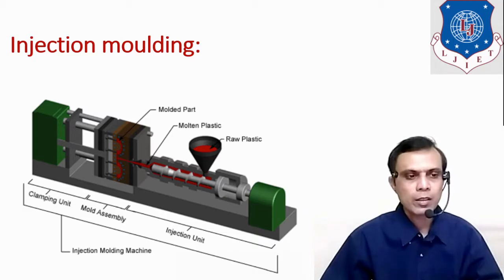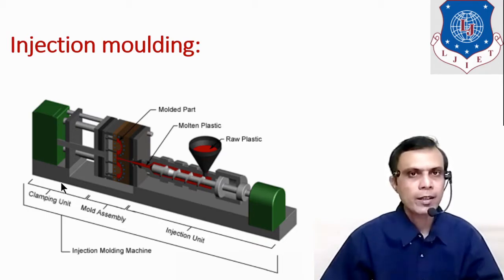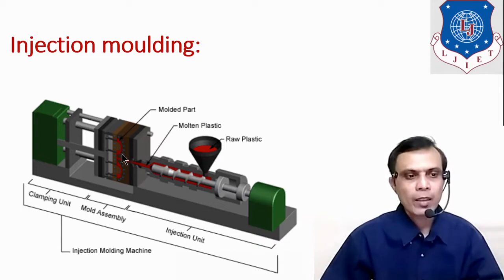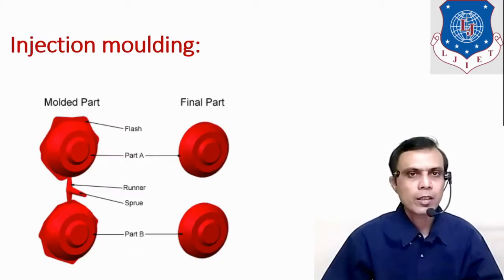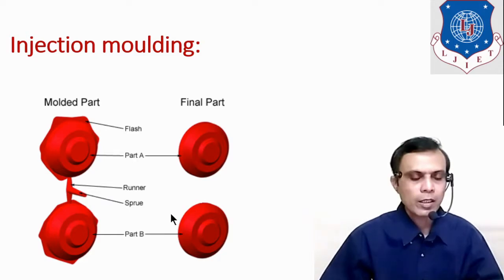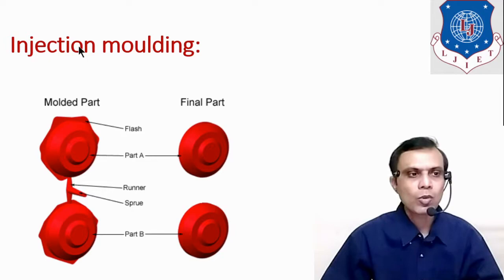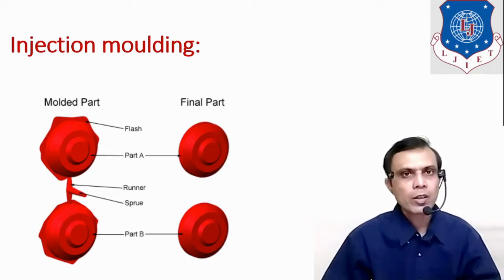The overview of the machine setup is shown here. It consists of three units: Injection Unit, Mould Assembly, and Clamping Unit. In this process, the molten plastic is fed into the die cavity with the help of a rotating and reciprocating screw. After solidification, the required mould is produced. The finished products are the moulded parts obtained at the end of the injection moulding process. This part contains flash, runner, and sprue, which are always required to be removed to get the final product.